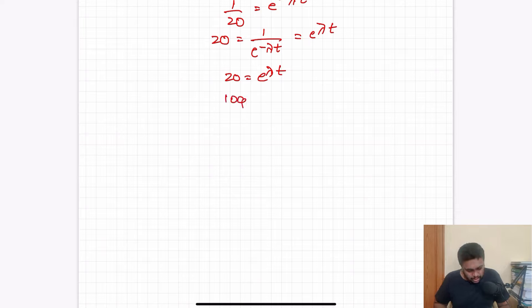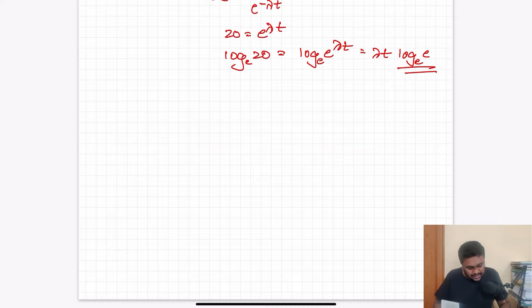I will take log on both sides. Log of 20 is equal to log of e power lambda t. e log is base e. Log e to the base e. e power n can be written as n log e to the base e. So lambda t into 1, so RHS is lambda t. LHS is log 20 to the base e.